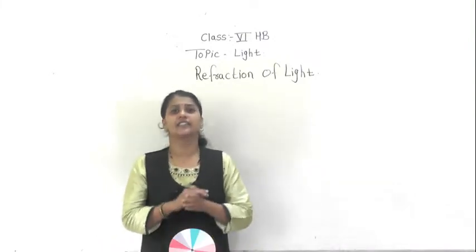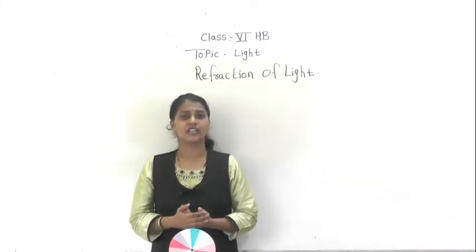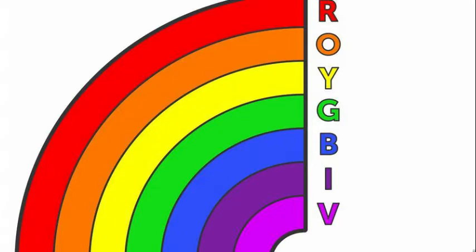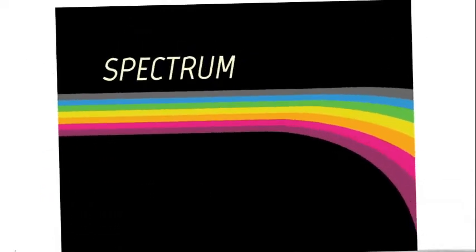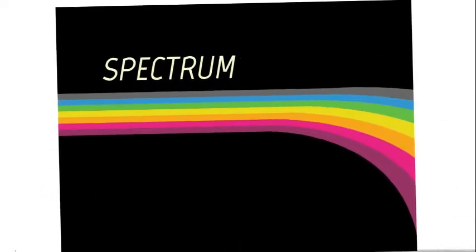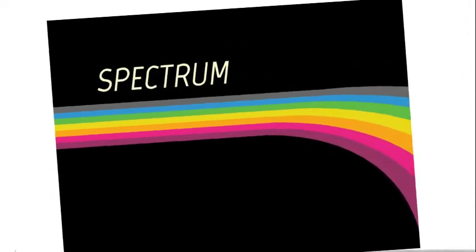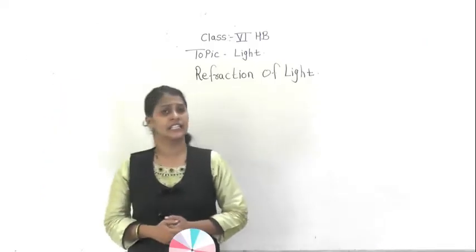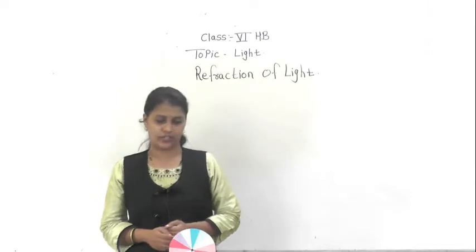The seven colors which are formed — that is called a spectrum. We have learned this in the last video.